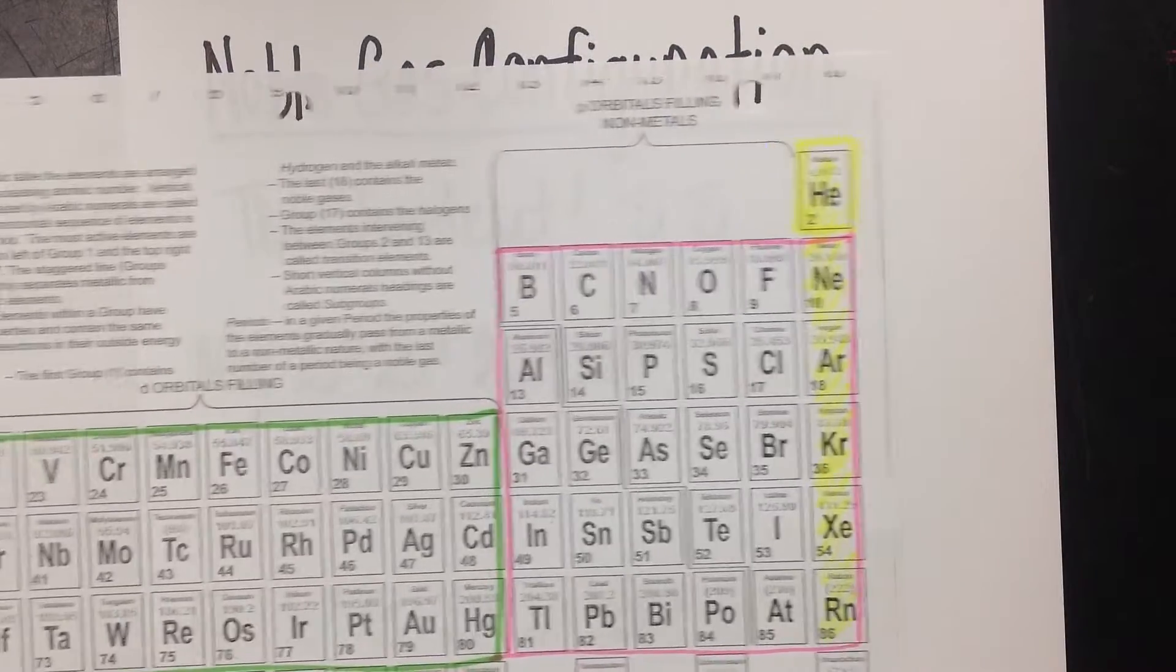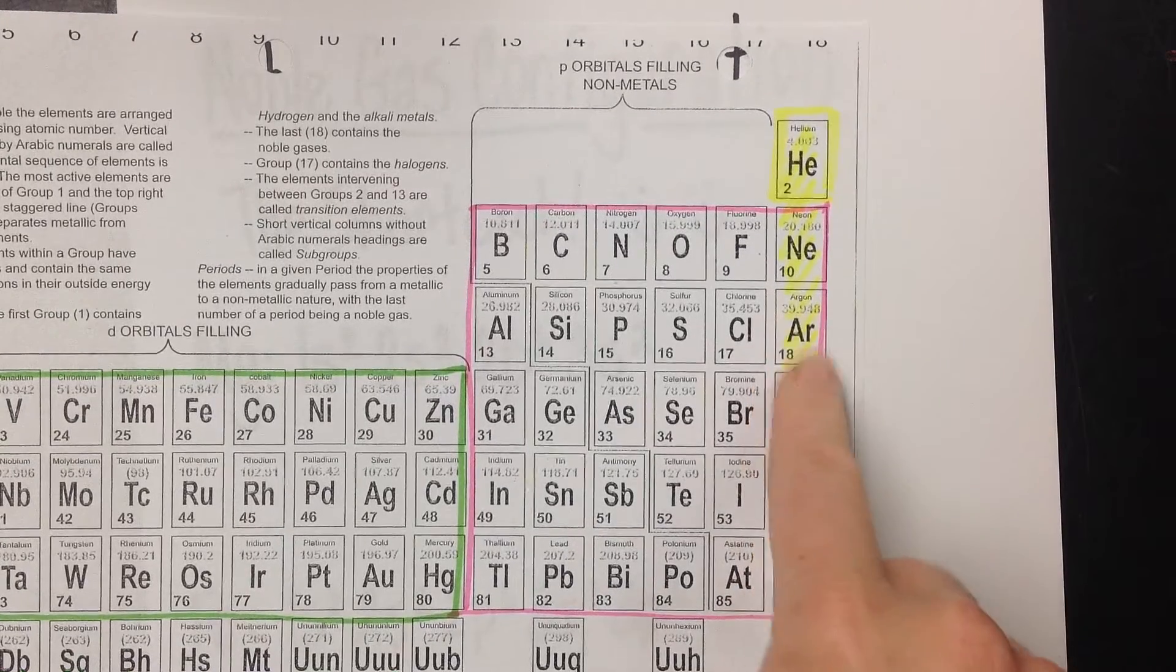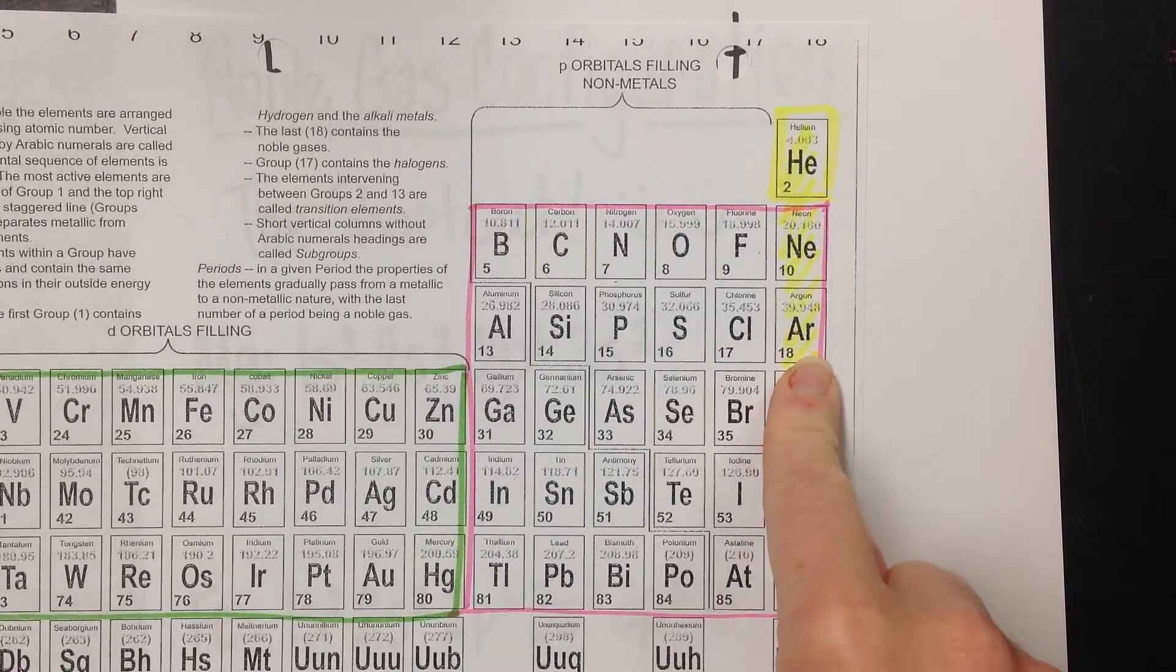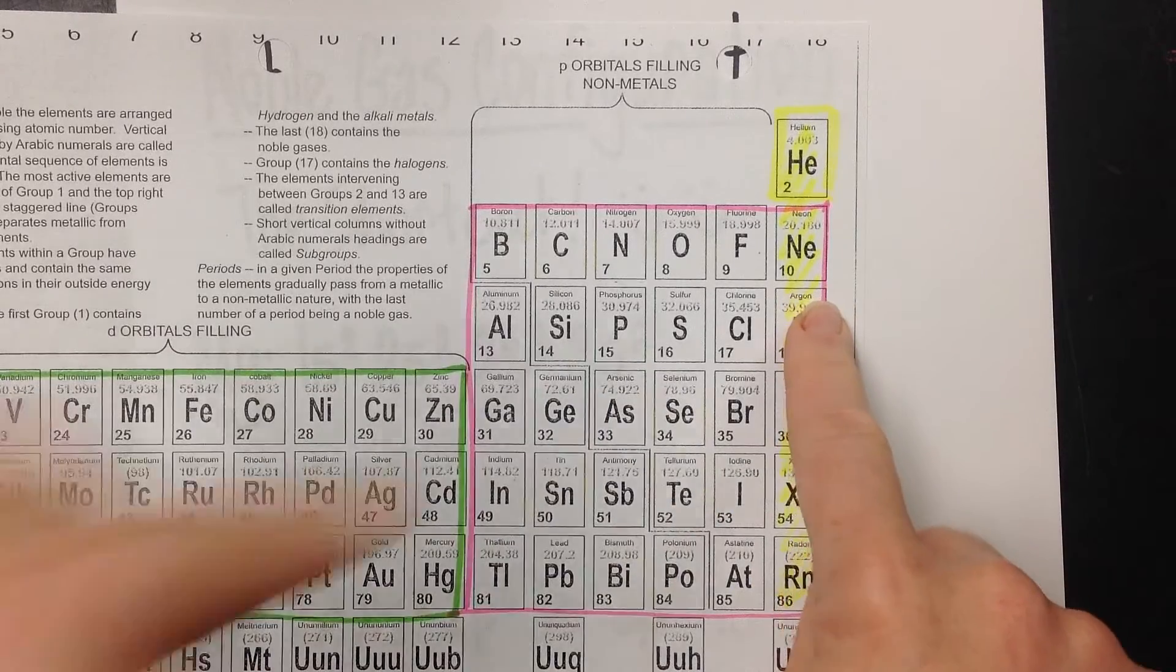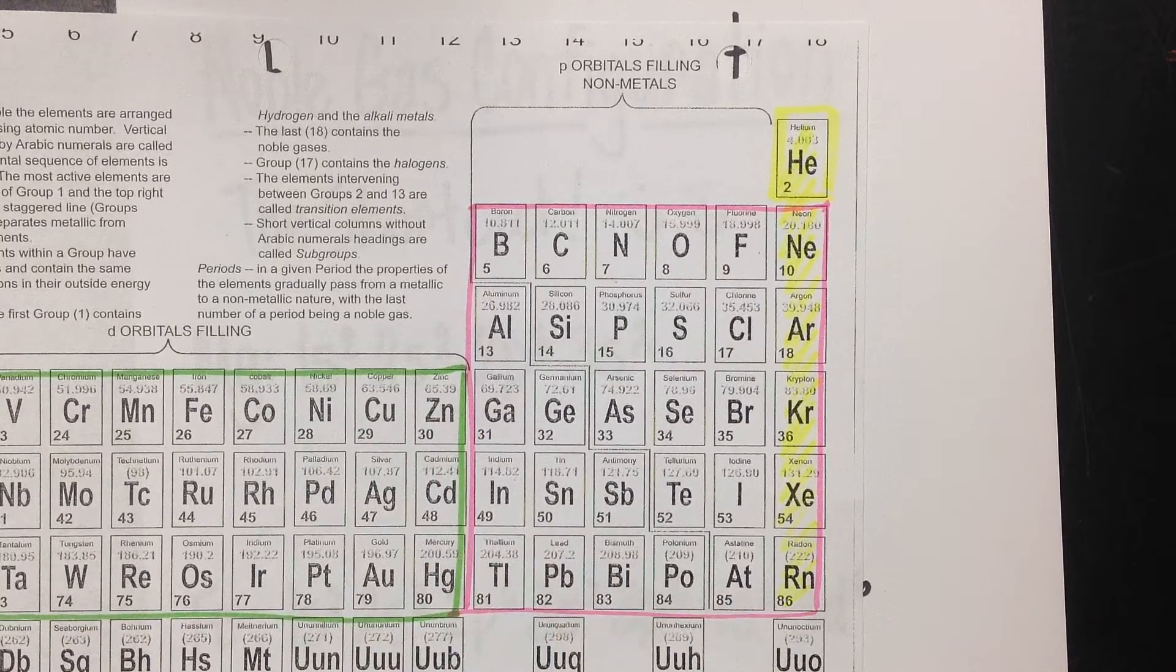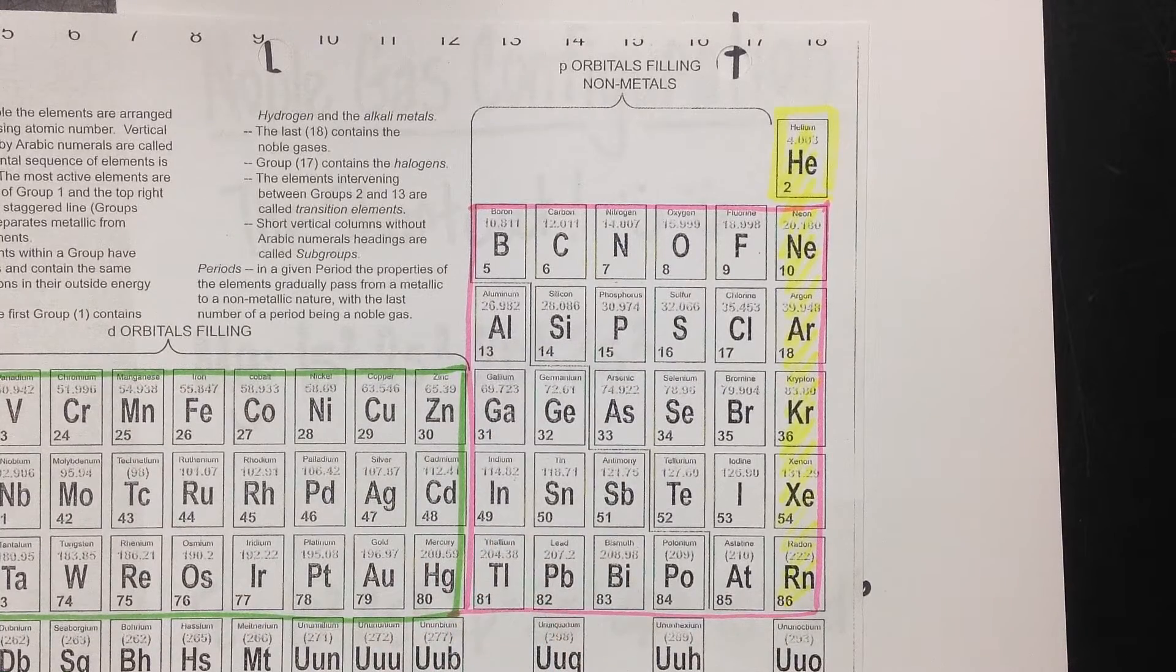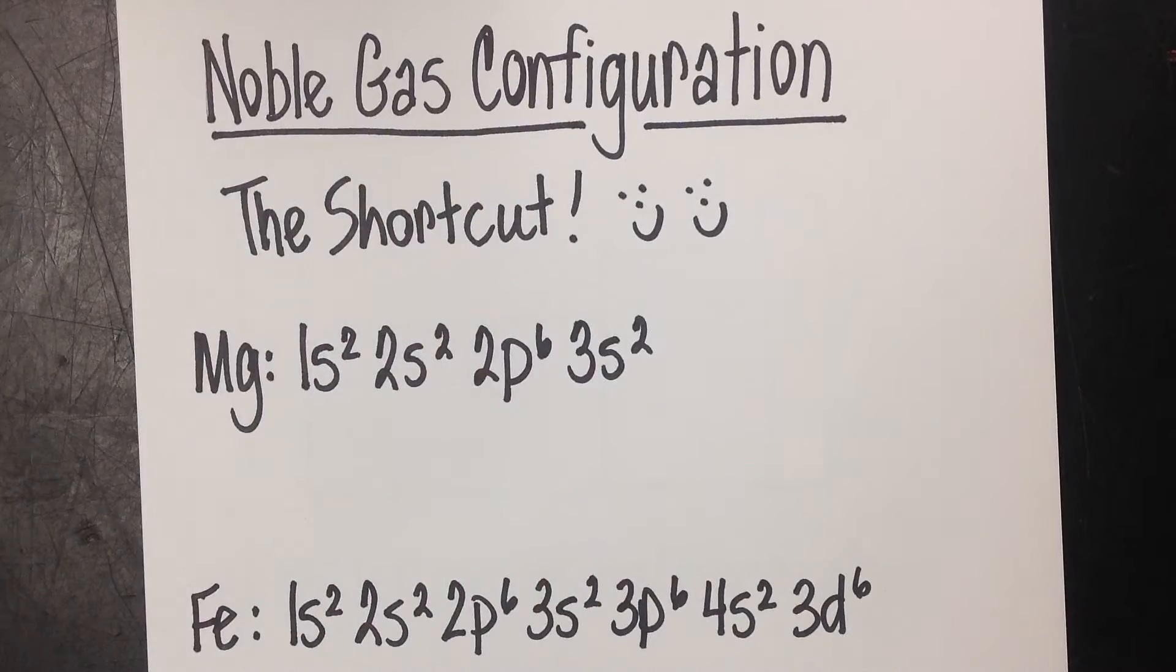Basically when we do noble gas configuration, we're telling the reader, you know where argon is? Okay, from there, go here. You know where neon is? From neon, go here. We're using that noble gas as a landmark, and we're taking the person from the noble gas to the element that we're going to. Super easy.